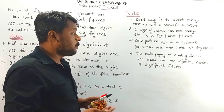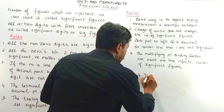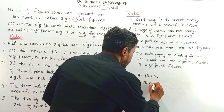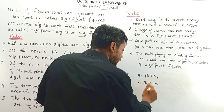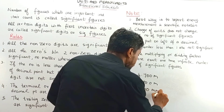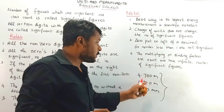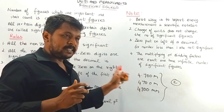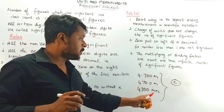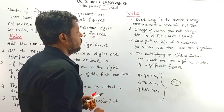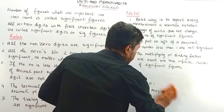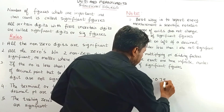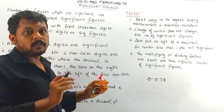Second note: change of units does not change the number of significant figures. For example, 4.700 meters written in centimeters is 470.0 cm, and in millimeters is 4700 mm. For all three cases, check the rules and you will find the number of significant figures is the same. Third note: a zero put on the left of a decimal point for a number less than 1 is not a significant figure — for example, in 0.075, the leading zero is not significant.